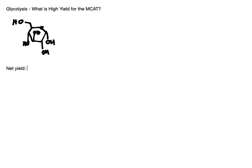The number one thing to know for test day is the net yield of glycolysis: 2 ATP being the most important, 2 NADH, and — something you may already know from the stoichiometry of the reaction — 2 pyruvate molecules. I like to call that the rule of twos.